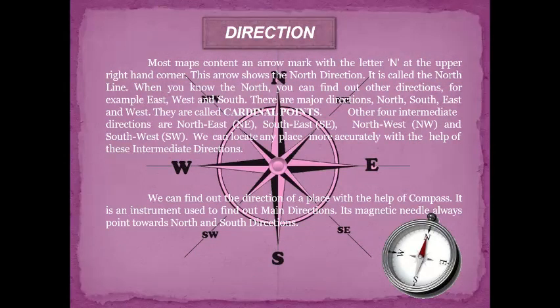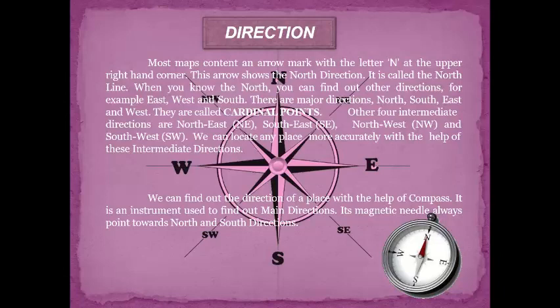Direction: Most maps contain an arrow marked with the letter N. There are four major directions — North, South, East, and West — known as cardinal directions. In most maps, there is an arrow with the letter N pointing towards the North, usually on the right-hand side of the map. This is called the North Line. It is a reference point that helps us find out the other directions such as East, South, and West. There are also four intermediate directions: North East, South East, South West, and North West. With the help of these directions, it is possible to locate any place on earth accurately.